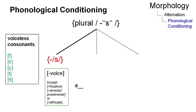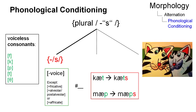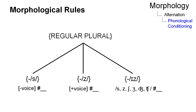If the final stem consonant is voiceless, we add the voiceless allomorph /s/, as in 'cats' or 'maps'. These conditions under which a particular allomorph is selected can be generalized and transformed into morphological rules.